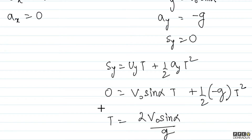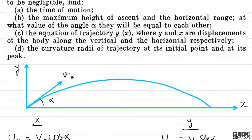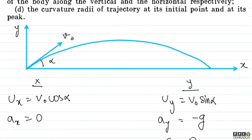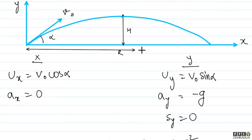Clear on this part? Now what we derived here will be called maximum height. Let's see how to find it — and alongside we also need to find the range, meaning the distance traveled along x.